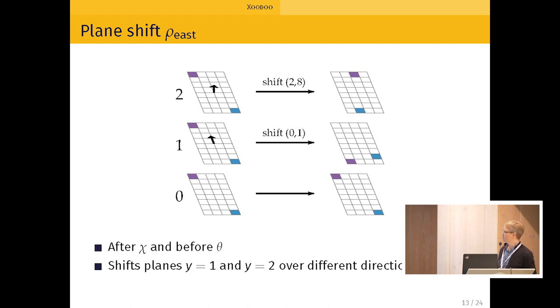Rho East. We don't shift the plane at Y equals zero. We shift by one position in the Z direction, the plane at Y equals one. And at Y equals two, we shift by two positions along X and eight positions along Z.